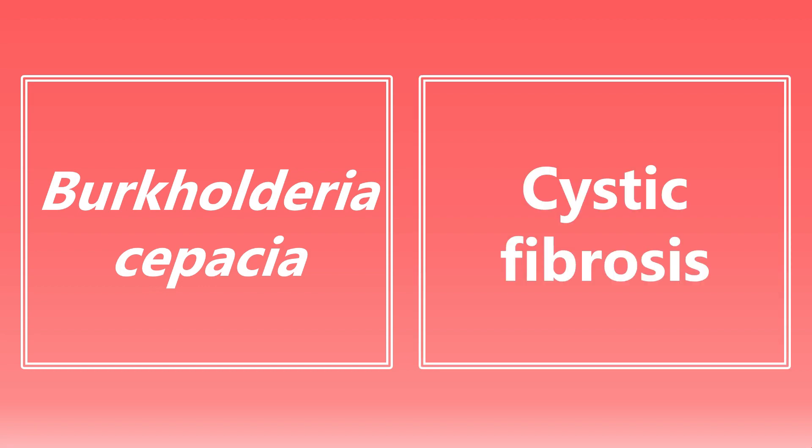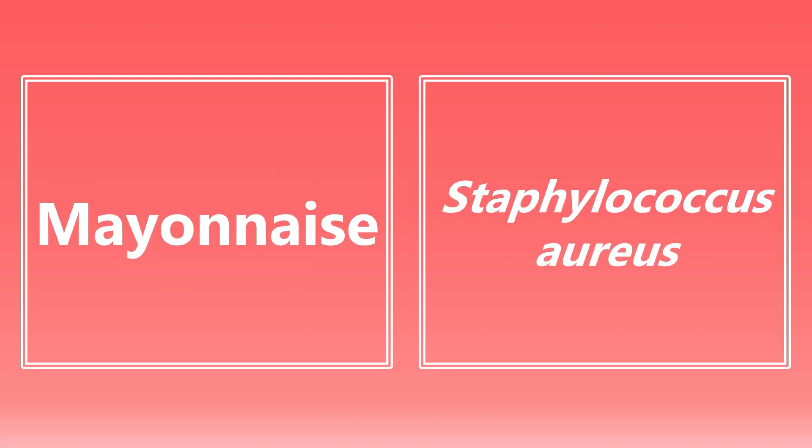Burkholderia cepacia — this one is a little bit lower yield, but I want to make sure you know it so that if you see it on the exam, you can make the quick association with cystic fibrosis. This is one of those microbes that patients with cystic fibrosis are at a really increased risk of. Mayonnaise — if you see this on the exam, I want you to think about Staphylococcus aureus. You've probably seen this question: someone's having a picnic, it's a hot day, there's an egg salad left out all day, everyone gets sick — you want to be thinking about Staphylococcus aureus.